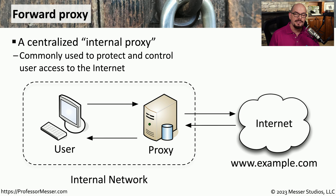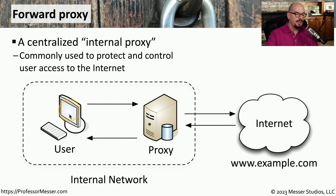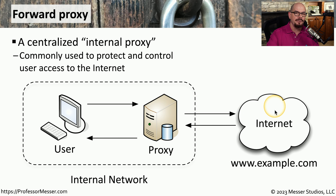This is a configuration of a proxy that we would install specifically for users to gain access to the internet. We often refer to this as a forward proxy, sometimes referenced as an internal proxy. With a forward proxy, the user and the proxy are in the internal network of the organization, and generally the organization has control over the configuration of that proxy. The user makes a request to the proxy, and then the proxy makes its own request to that website on the internet. The proxy receives a response from that website, where it can then provide additional security such as URL filtering and checking for any type of malware. Once the proxy has checked this data and knows that all of the information is safe, it can send that response down to the user.